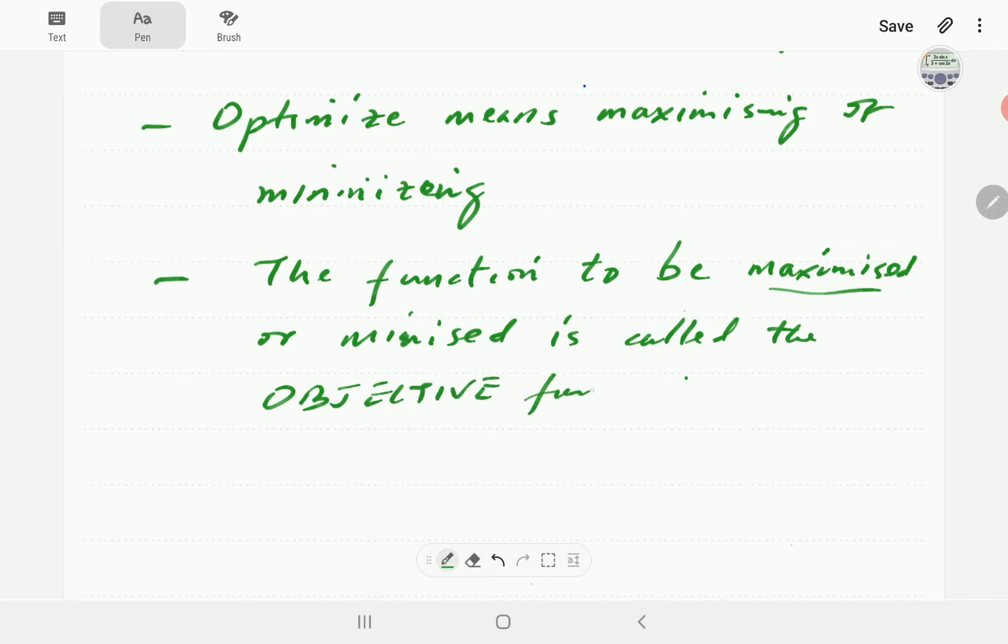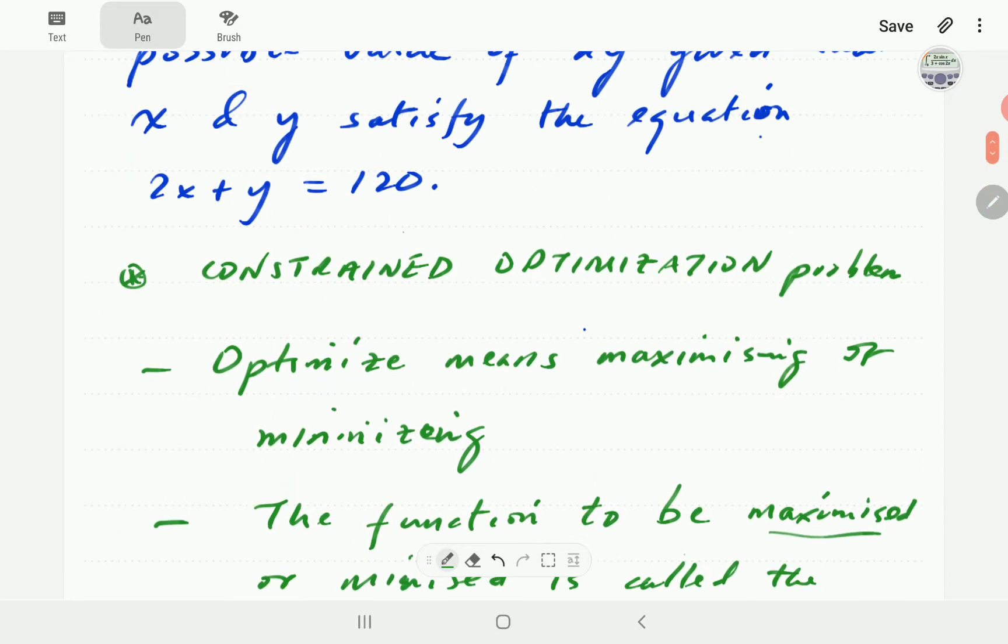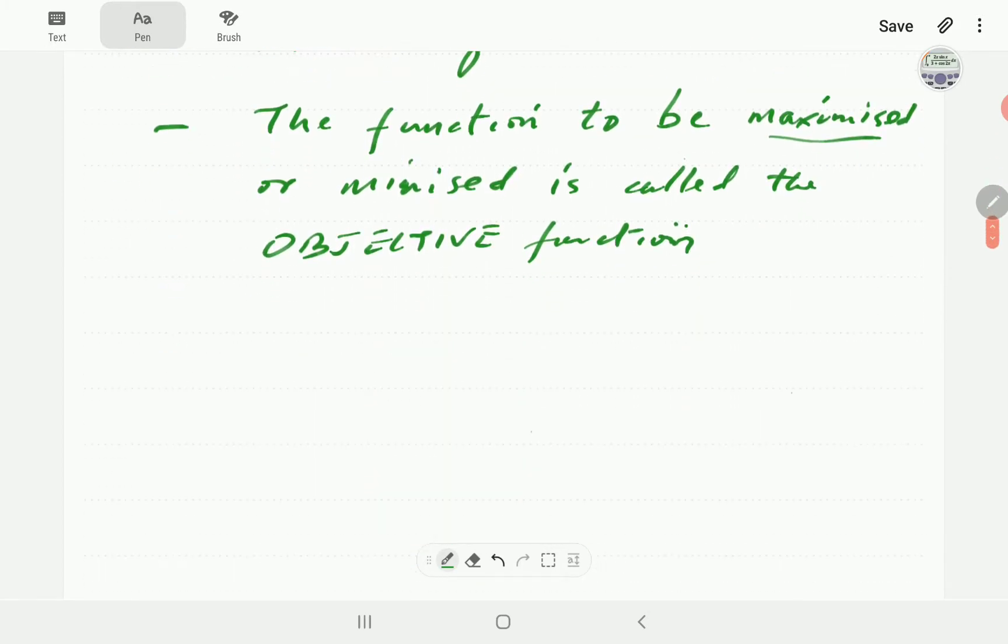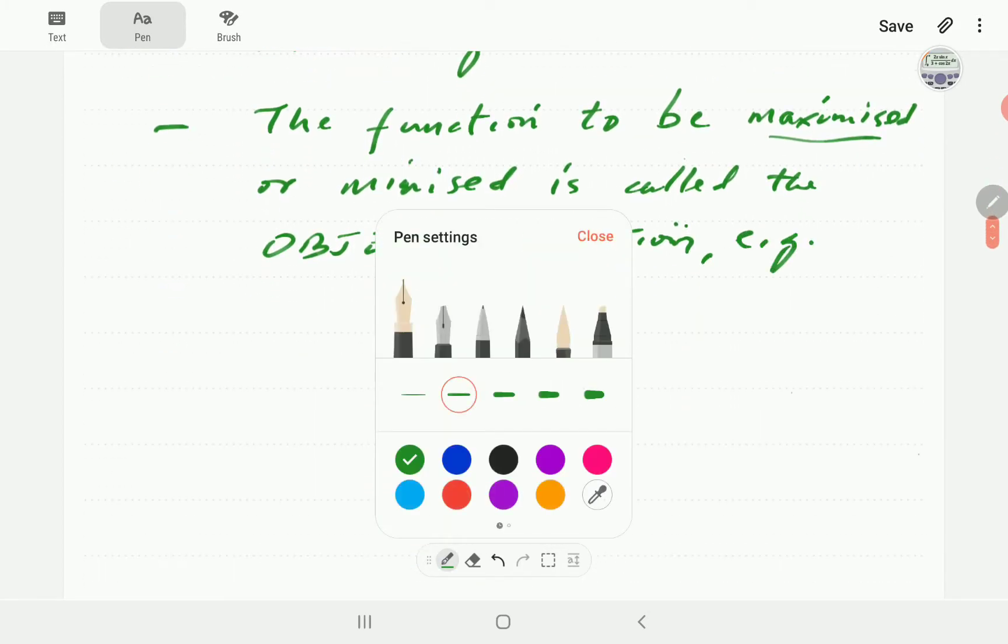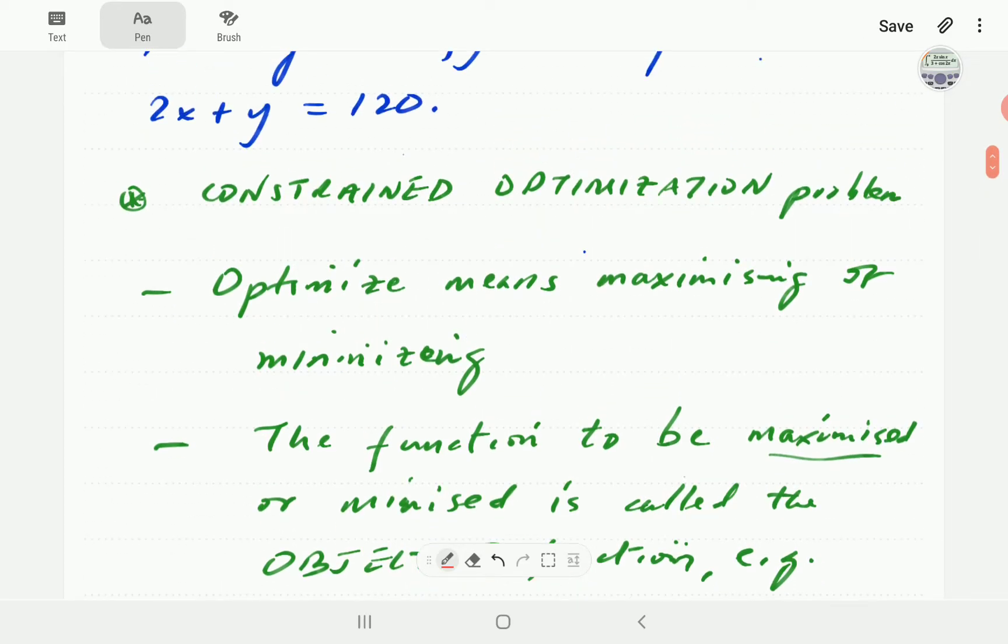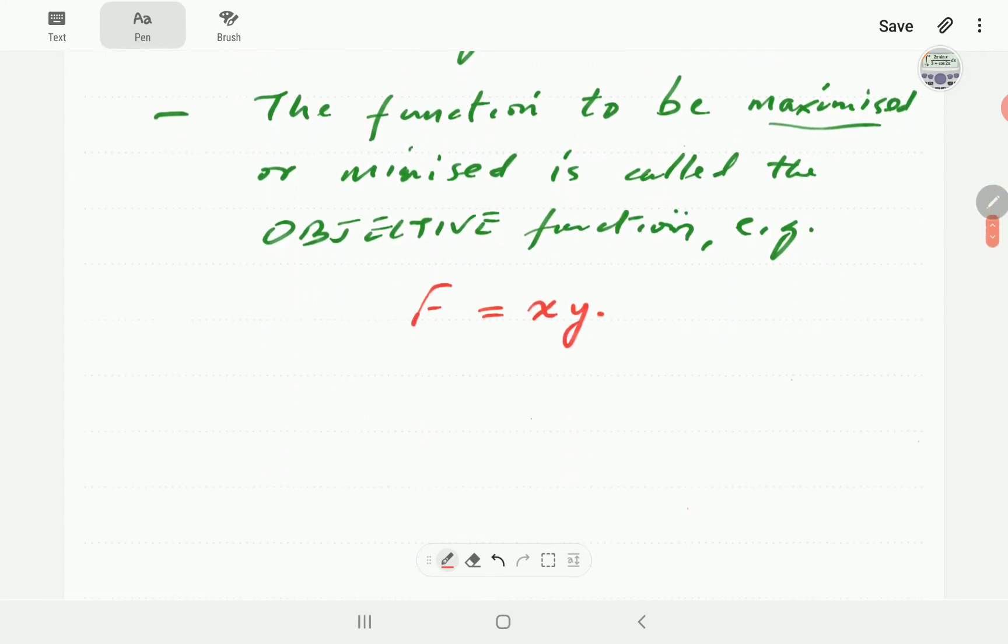In the example at hand, the function that we are maximizing because of the largest there is x times y. So let's call that function F. F is equal to x times y in the problem at hand. Now we're calling this problem a constrained optimization problem.